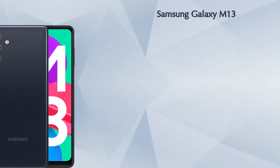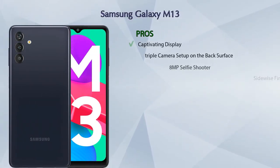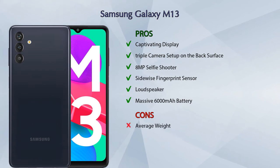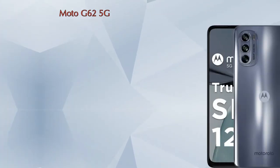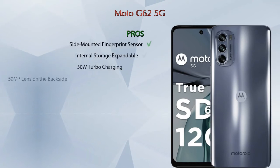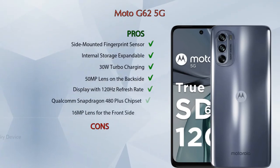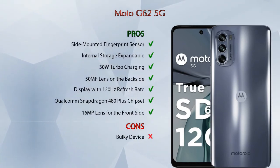Now let's talk about pros and cons. Samsung Galaxy M13 has six pros and one con, and Moto G62 5G has seven pros and one con.